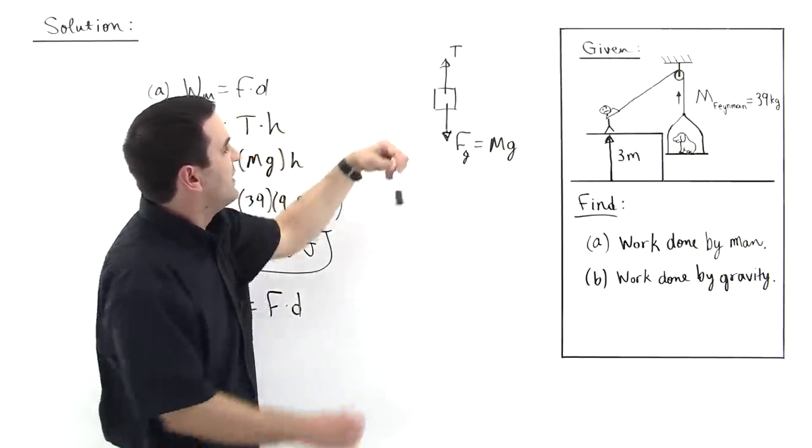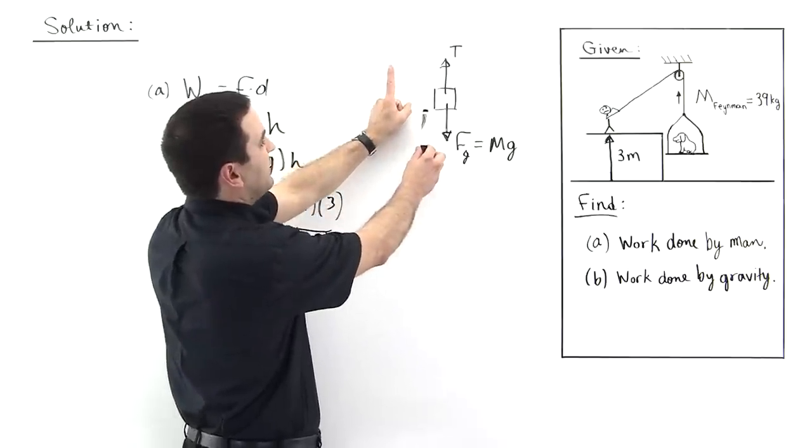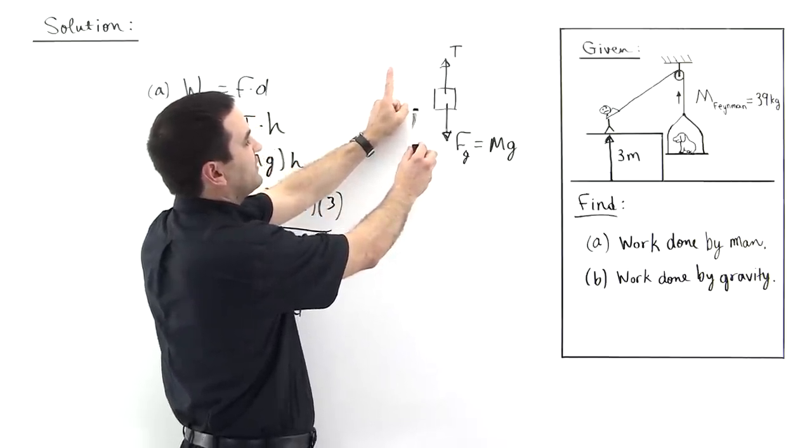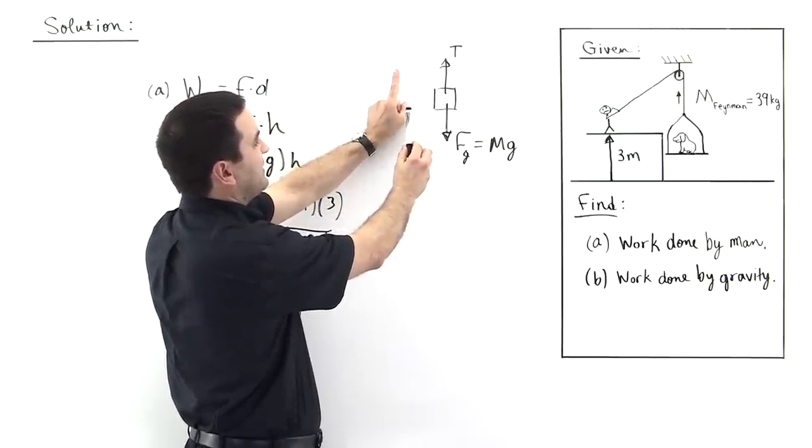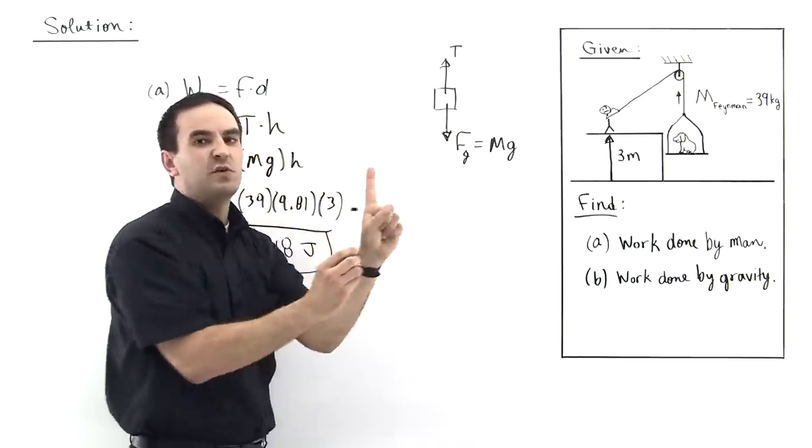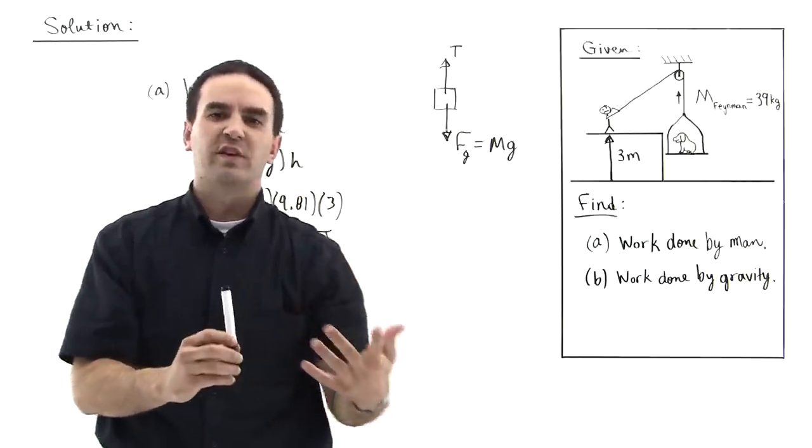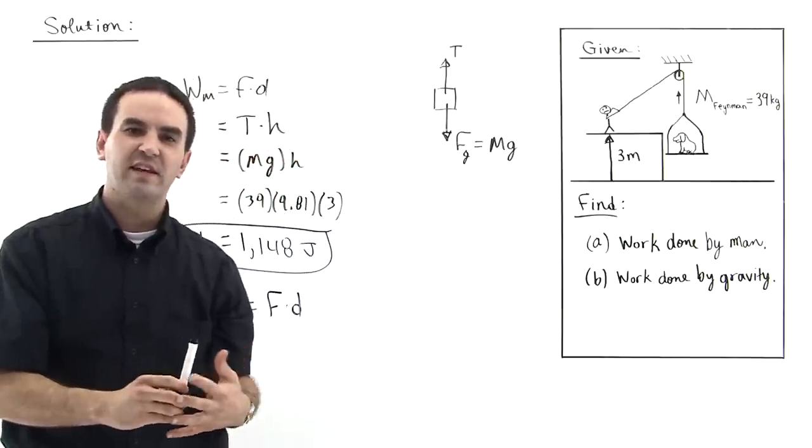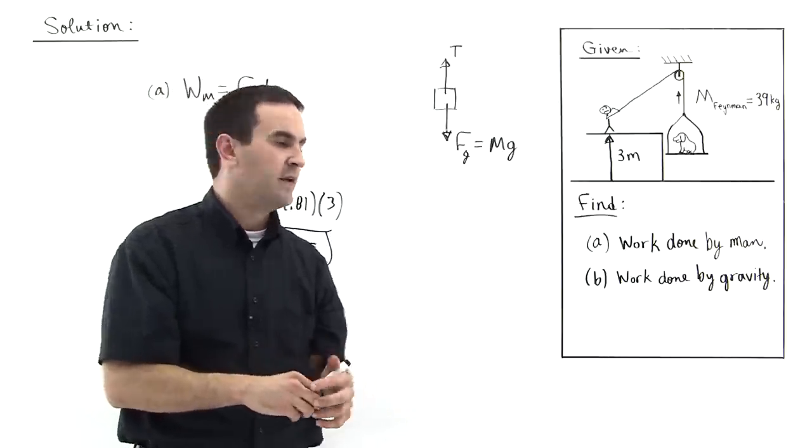The force is pushing down and the displacement is up. So because the force due to gravity and the displacement are in opposite directions, we say that this work is negative because the force due to gravity is retarding the motion.